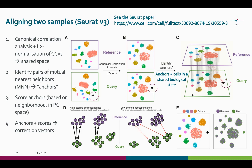These anchors will guide the integration. In some cases, there are unique cell populations that are only present in one of the samples, which could cause problems in the integration process. This is why each anchor pair is scored based on the consistency of its neighborhood. The incorrect anchors, shown here in red, tend to have low scores and are then down-weighted in the analysis. The last step is to use these anchors and their scores to compute the correction vectors for each cell. After the correction, the expression values of each cell are transformed so that they can be jointly analyzed.